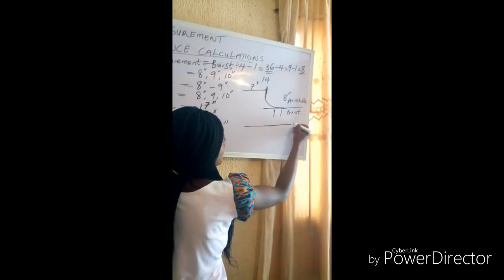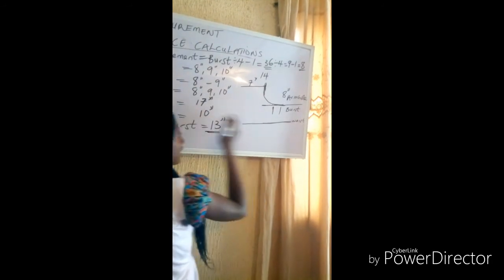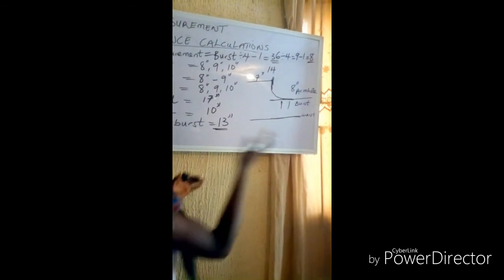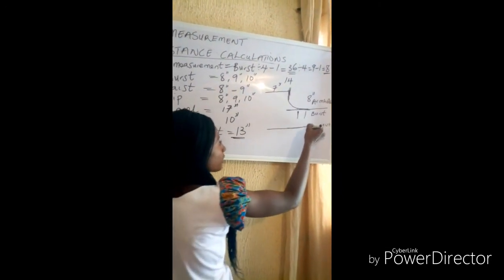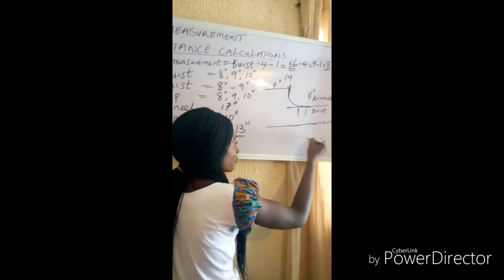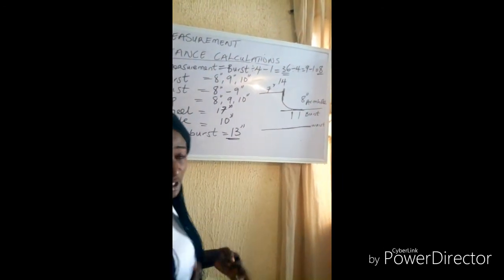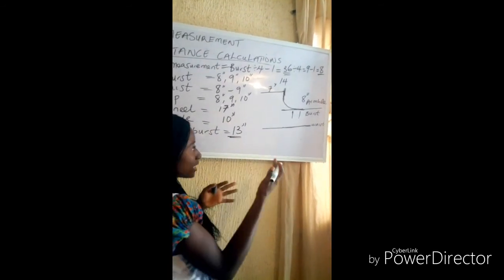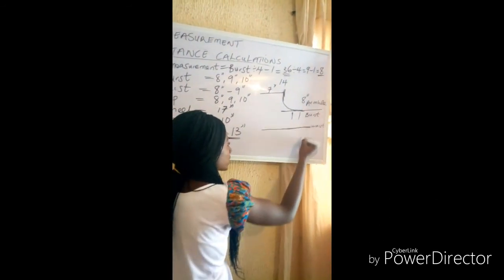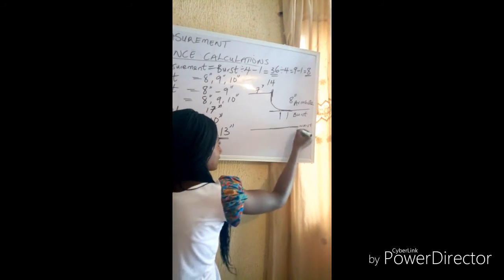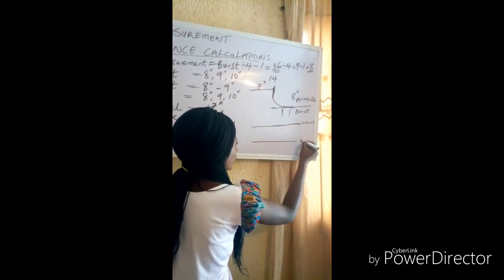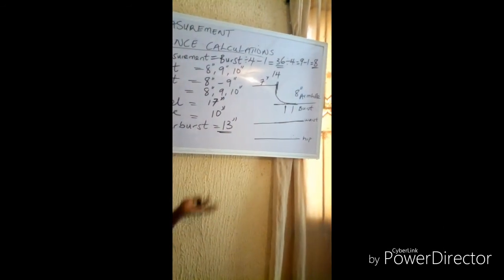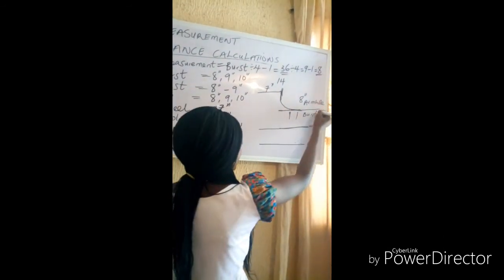The distance from the waist to the hip varies depending on body shape. For those with a lower part, make it 10 inches; for those with an upper part, make it 8, 9, or 10 inches. You mark from your waist down 8, 9, or 10 inches — this is your hip measurement. If your hip is 40, you divide it by 4, plus your sewing allowance, and you get what you want.